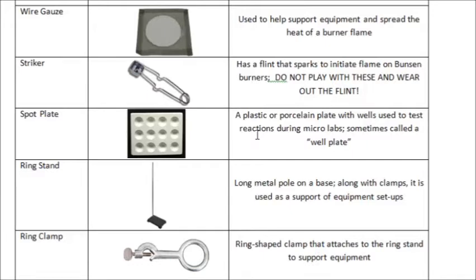The ring stand has that big long stick up top where you put your clamps and wire gauze. That holds things high so you don't have to hold them with your hands. A ring clamp is another thing that holds equipment to the ring stand.